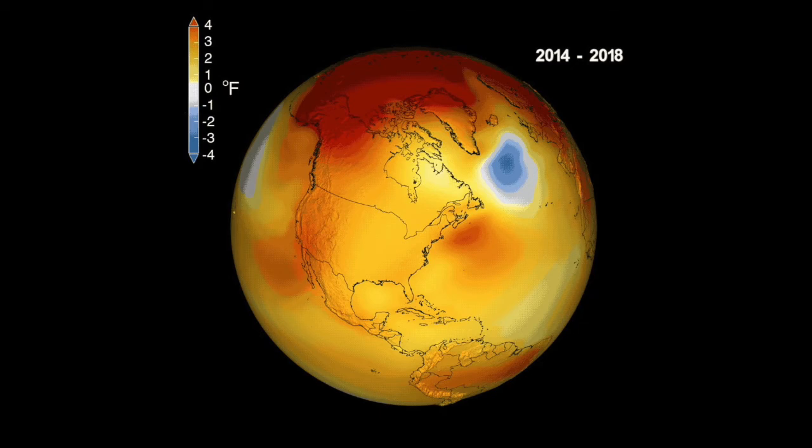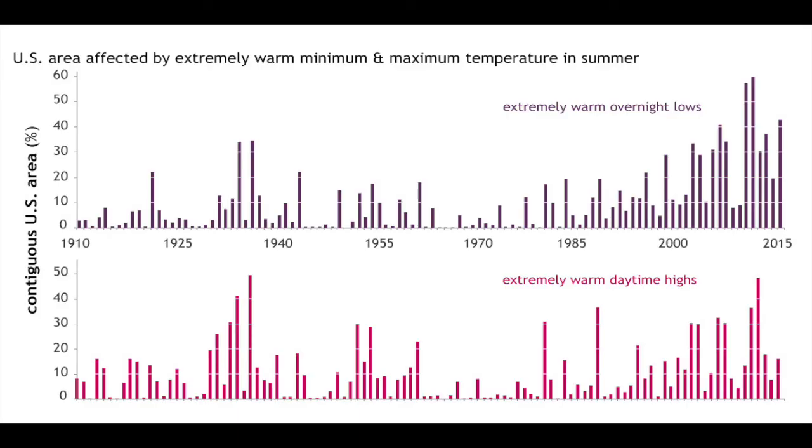But in fact, we're seeing the opposite. We see more warming at the poles than at the equator, more warming in winter, and more effect on the nighttime lows.